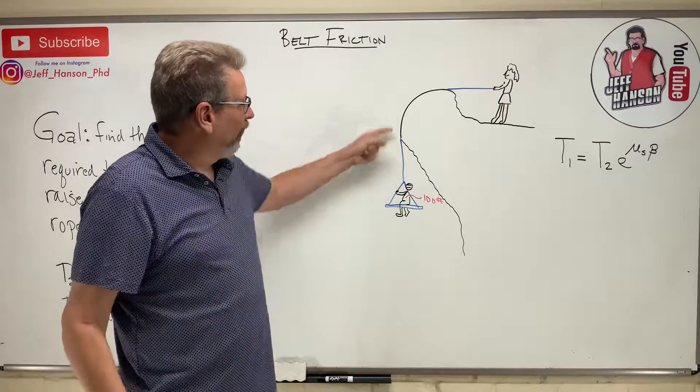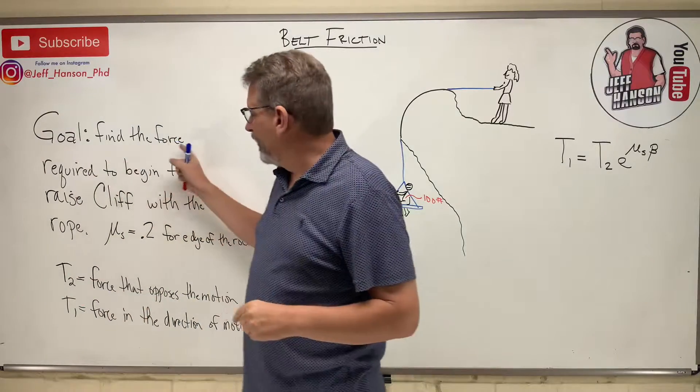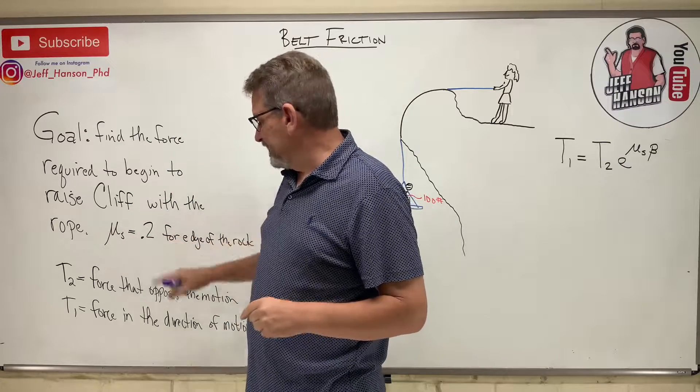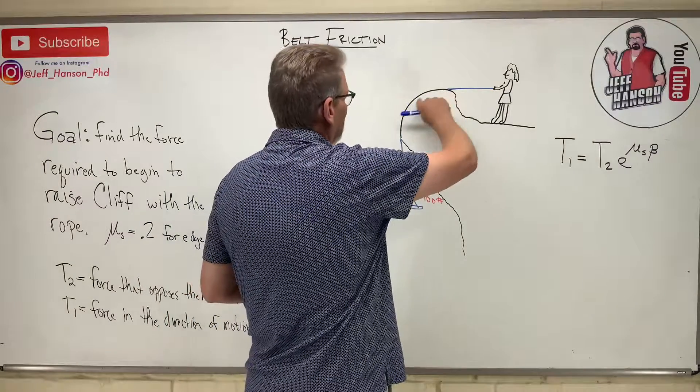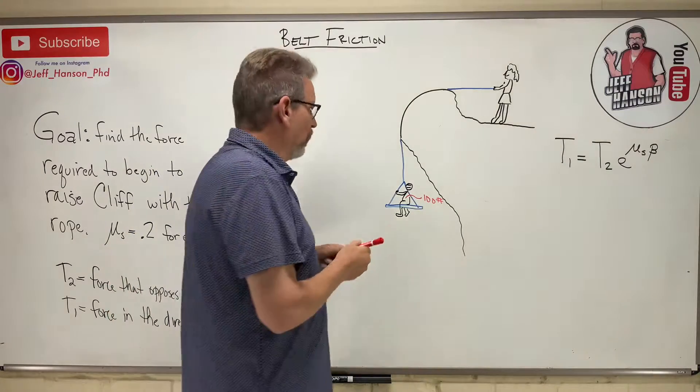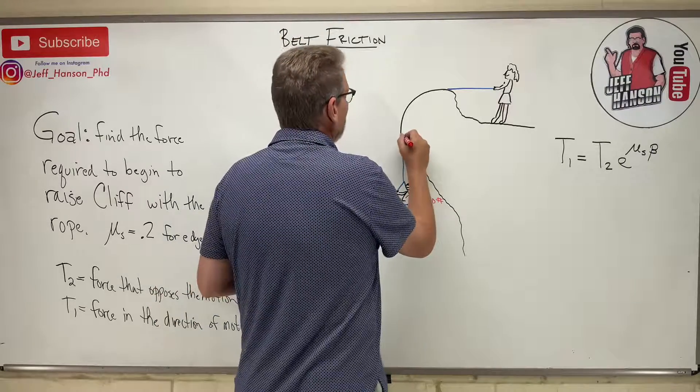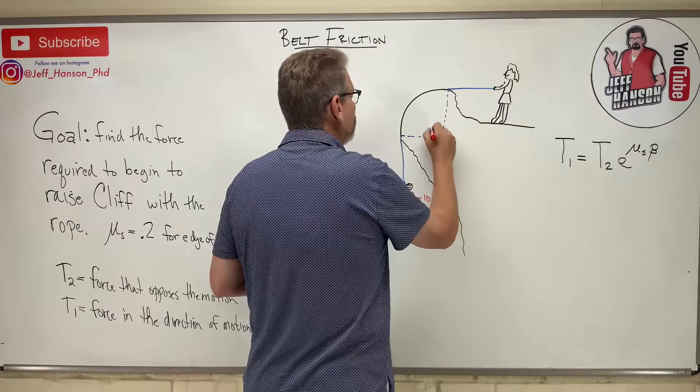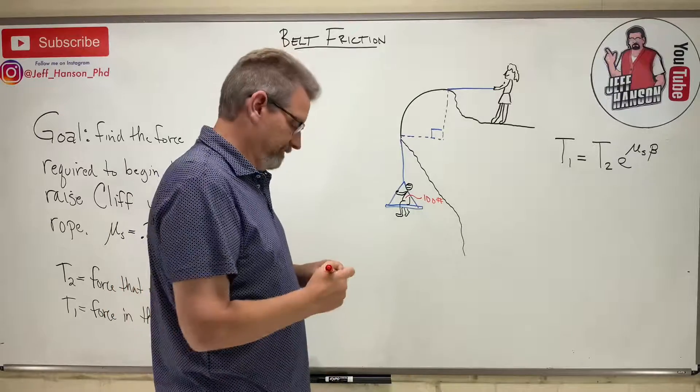She's trying to pull this little boy up the cliff here and we want to know what force is required to begin to raise Cliff with the rope. Mu sub s equals 0.2 for the rock edge. Now you'll notice that the rock edge here, I don't know what happened but it's a perfect quarter of a circle, it's a miracle. So the contact where the rope is actually contacting the cliff goes from here to here, and that is a right angle. It's a quarter of a circle where it's contacting the cliff.